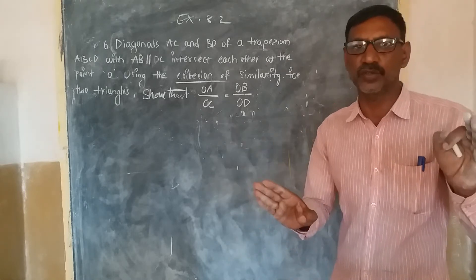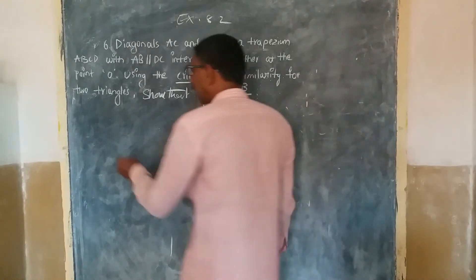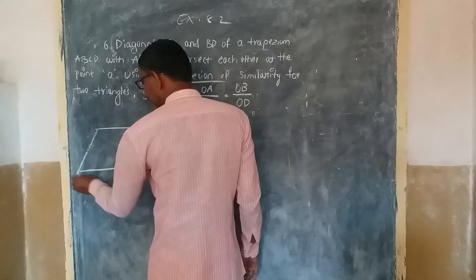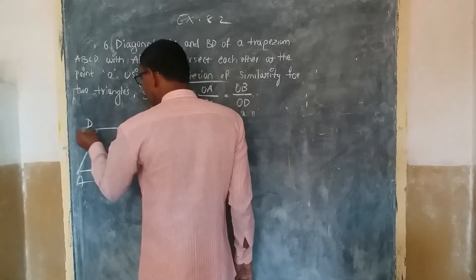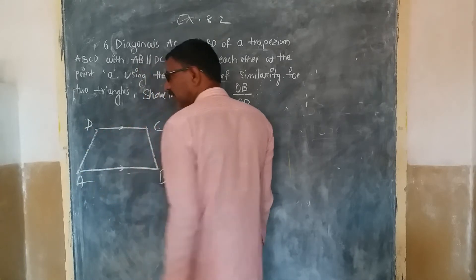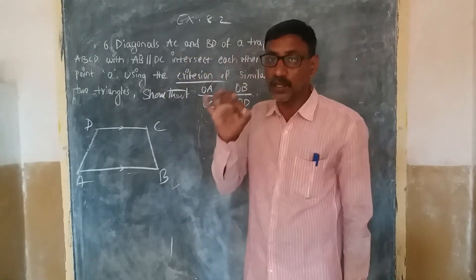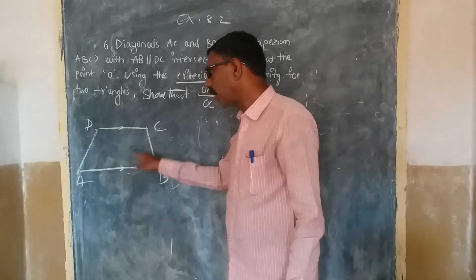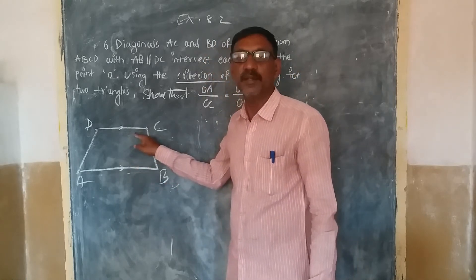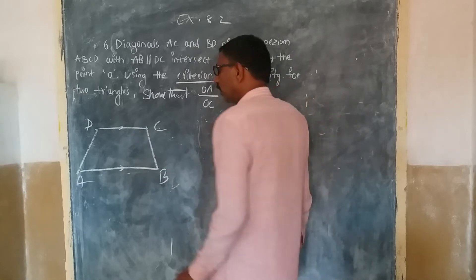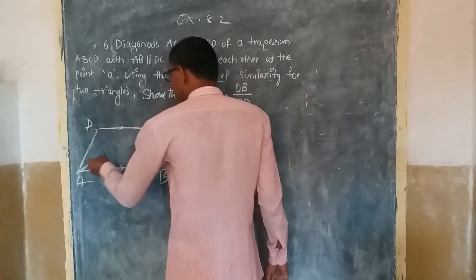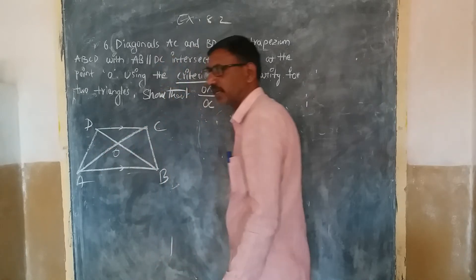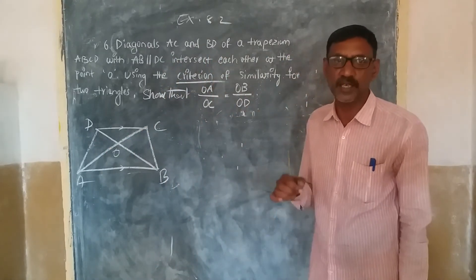So, this is my trapezium ABCD. AB is parallel to CD — that is the same thing. If AB is parallel to CD, this is an interesting point. Diagonals AC and BD of the trapezium intersect at O.